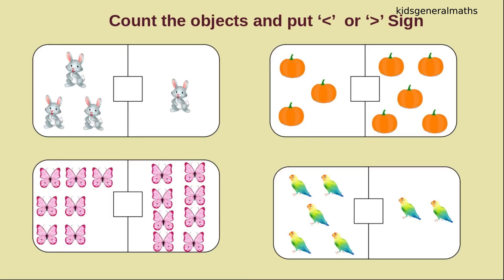Here we are going to count the objects and put the appropriate sign. First we are going to count the first object. One, two, three. How many rabbits? Three rabbits. One. So how many? One rabbit. While comparing these two numbers, which number is greater? Any guess? Yes, three is greater. So the crocodile will open the mouth towards three. So we will say three is greater than one.